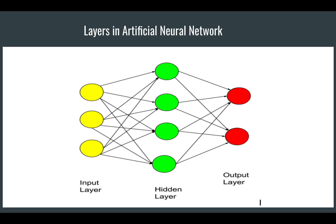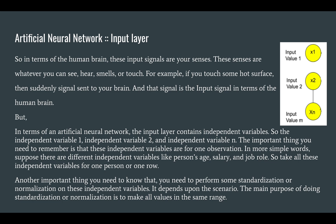To summarize: the input layer corresponds to the number of features in your dataset or the pixel dimensions of your image. The output layer corresponds to the number of classes you have. The hidden layer is defined by you in terms of count and neuron numbers, but its internal computations are hidden — all the mathematical and computational power happens inside the hidden layer.